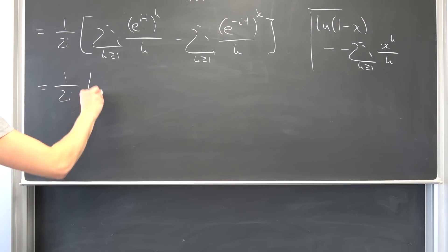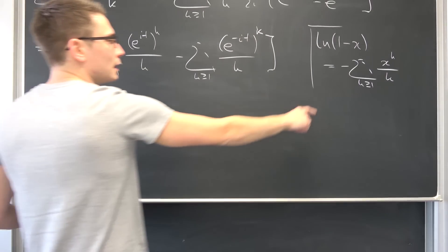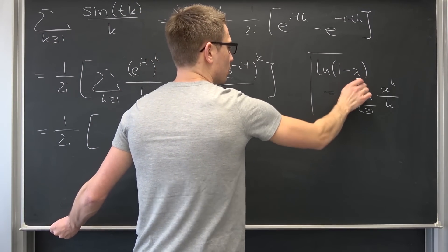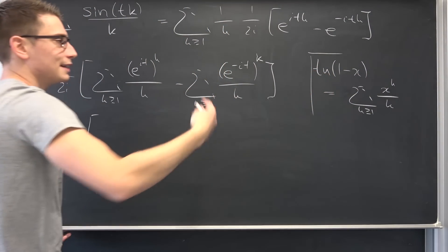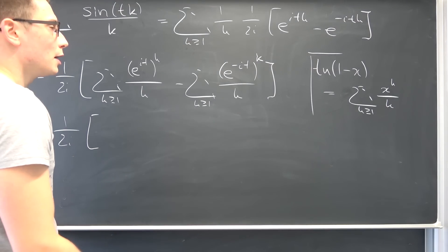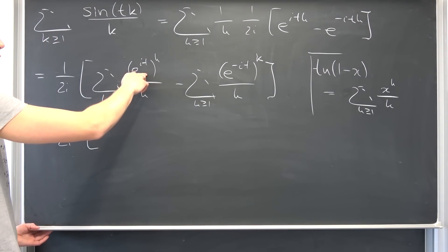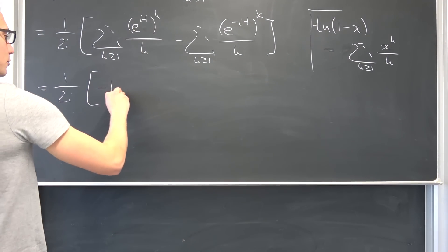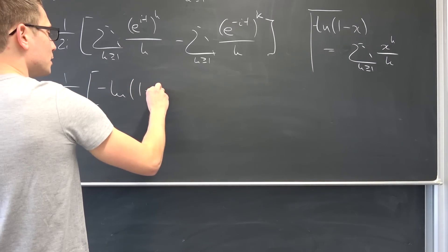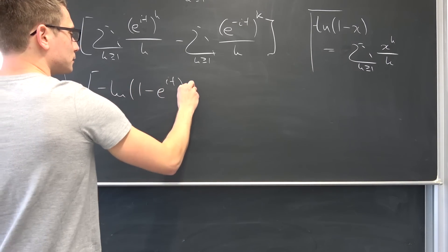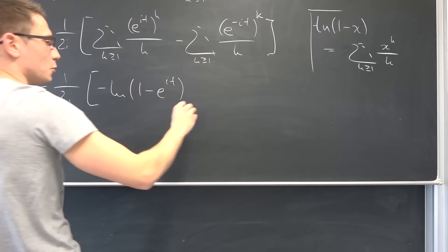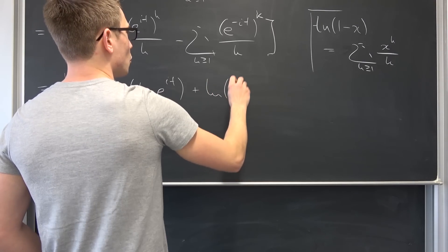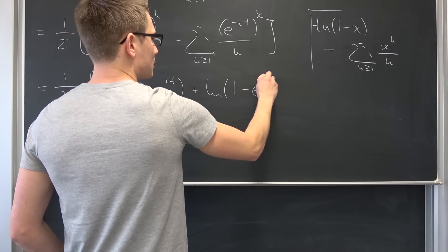Such that we can see the similarities here. Now if we were to write this out, we are going to have 1 over 2i. Also, don't forget your negative signs. Then if you multiply both sides by negative 1 and set equal to 0, we are going to get negative natural log of 1 minus e to the it and then negative negative becomes positive, positive the natural log of 1 minus e to the negative it.